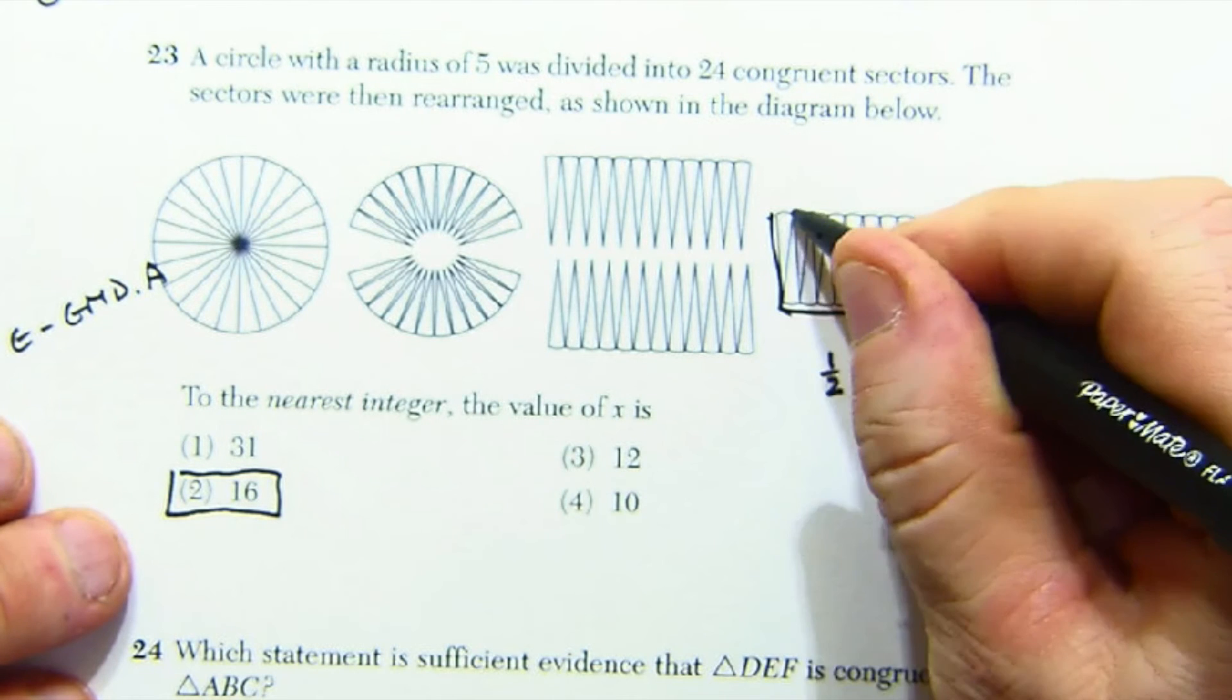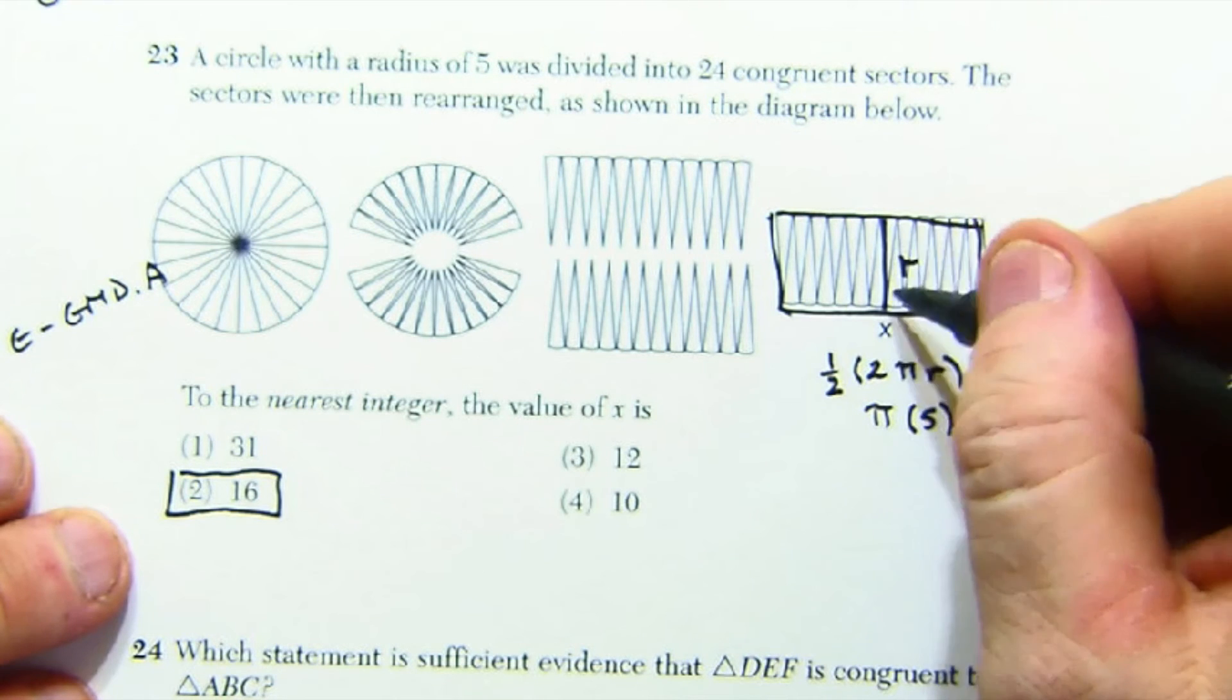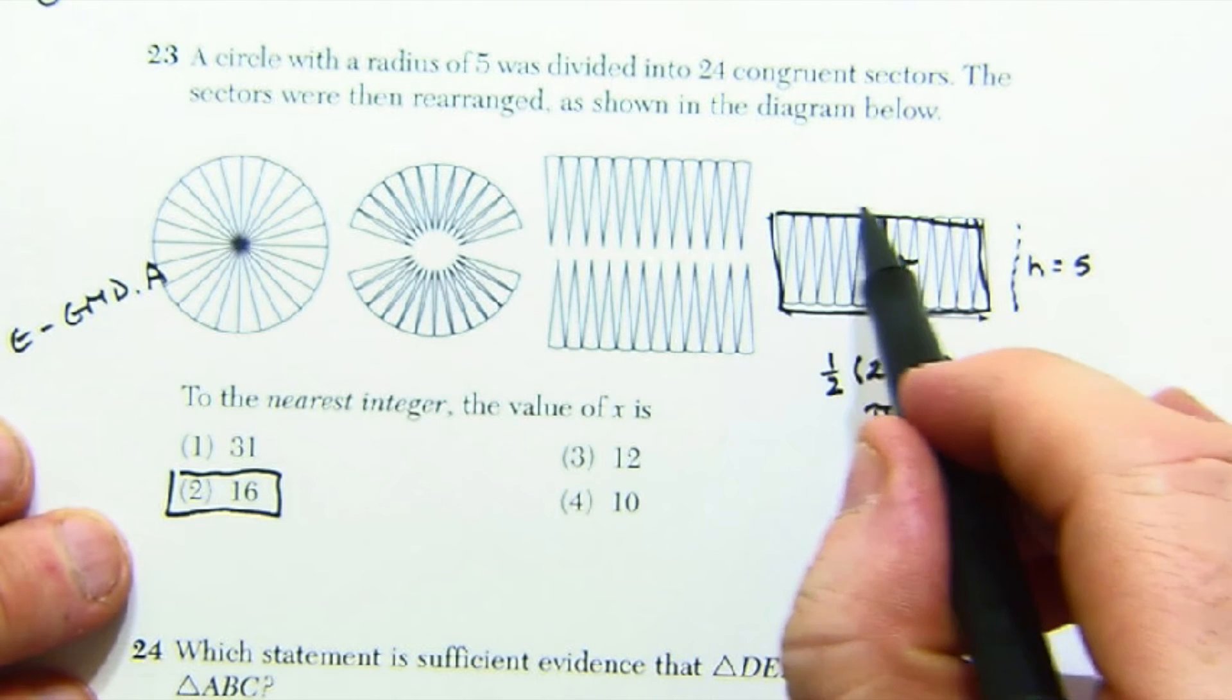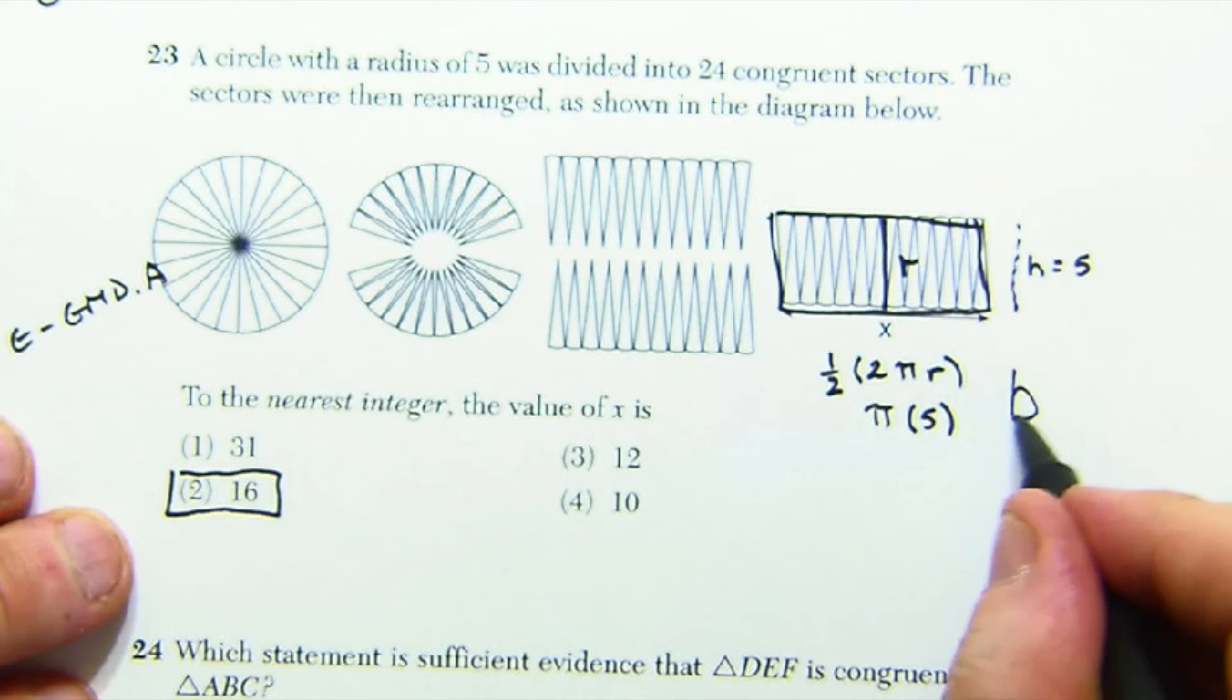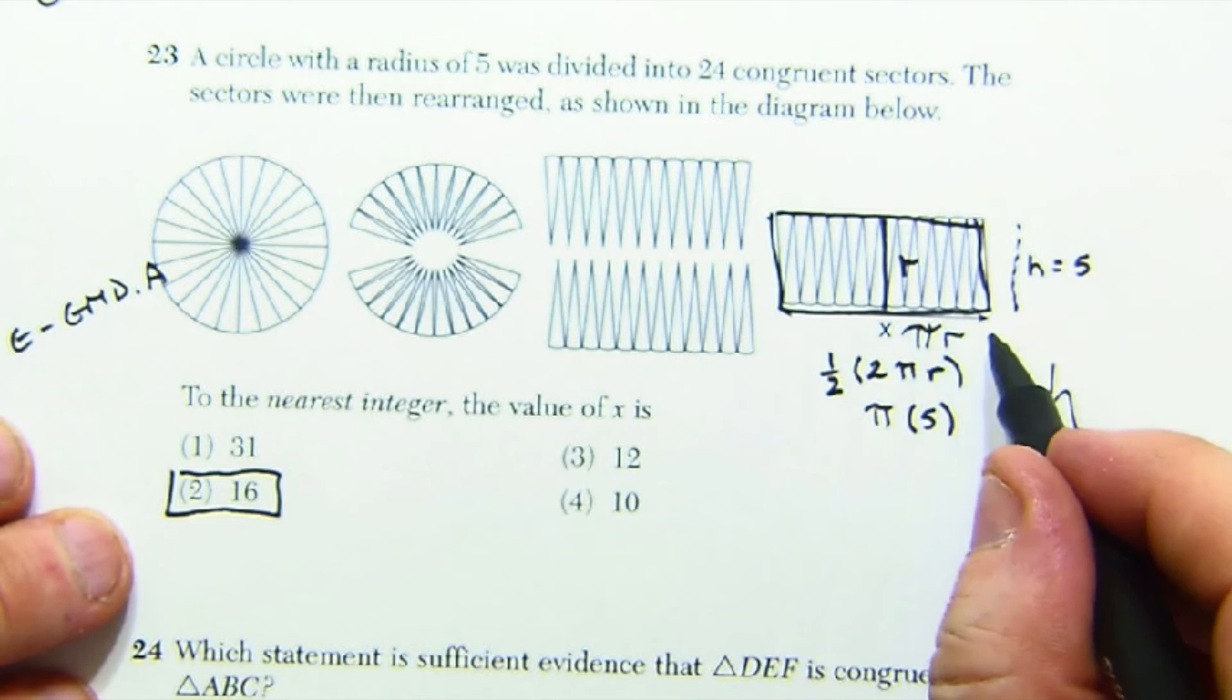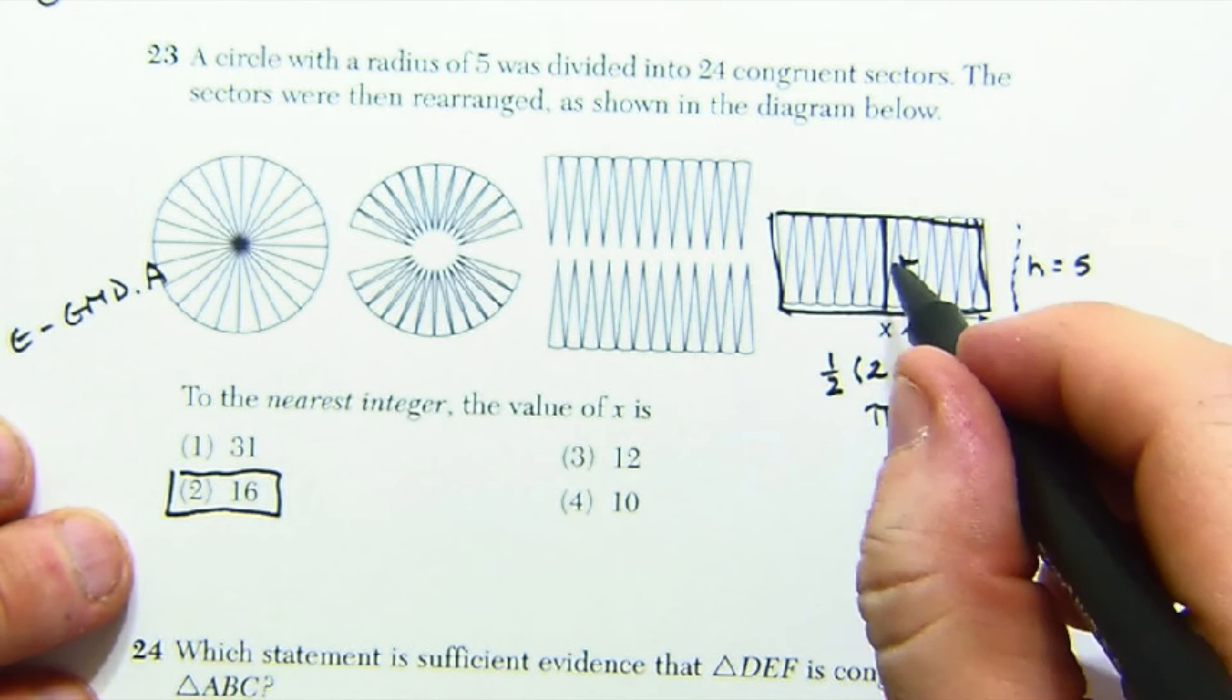And that the parallelogram is approximately the radius tall. And notice the little bumps along here, that's half of a circumference. The other half is over here. So this base times height would be pi r, and this is pi r, half of a circumference, times the height, which is r, giving us pi r squared.